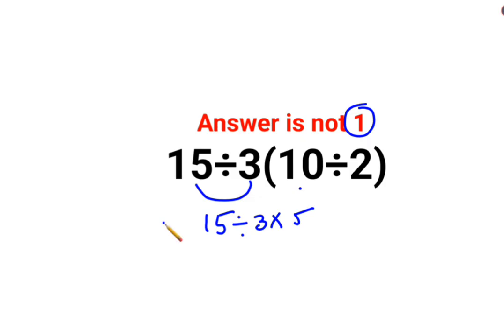Now the goof up happens from this step because they think that this is so easy. 15 divided by 3 multiplied by 5 is 15. So answer for this one is supposed to be 1.